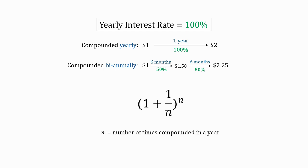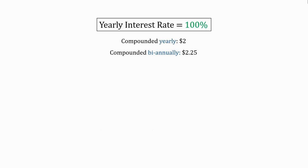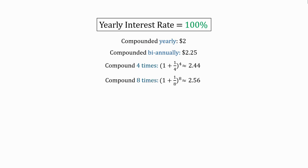This relationship can be summed up by this equation. If we want to compound four times a year, using this equation, we get $2.44. Eight times, $2.56. What about every day — 365 times? Then we get 2.714.